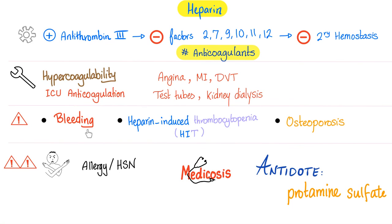Side effects include bleeding, heparin-induced thrombocytopenia — which is the topic of the next video — and osteoporosis. Contraindication: do not give heparin if the patient is allergic or has hypersensitivity against heparin. And the antidote, if you gave too much heparin, is protamine sulfate.